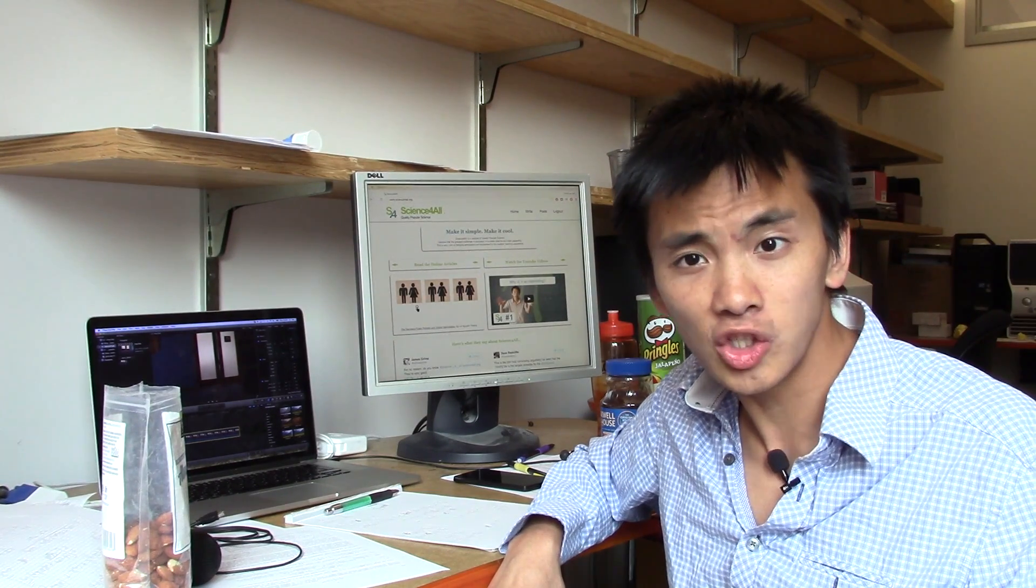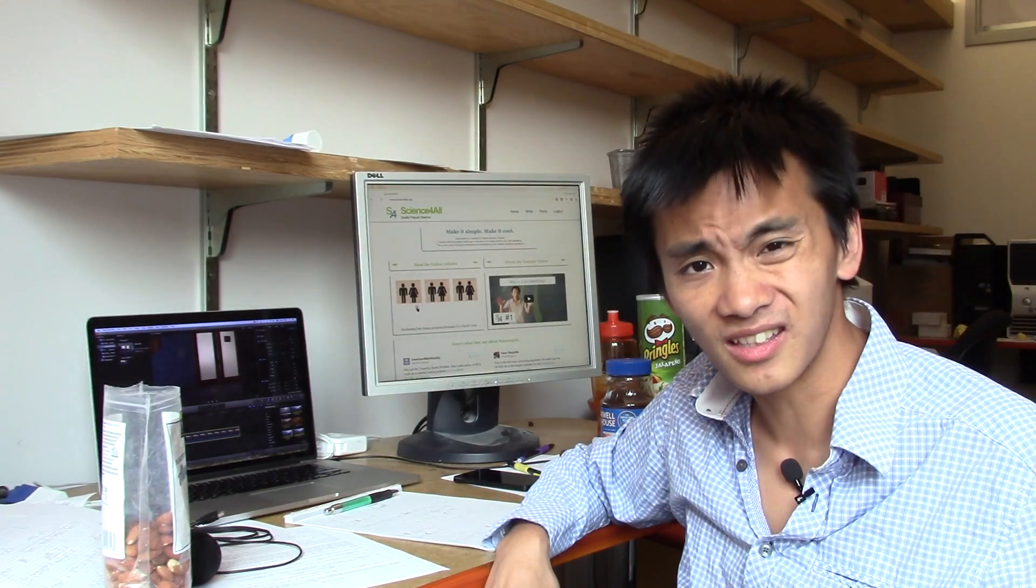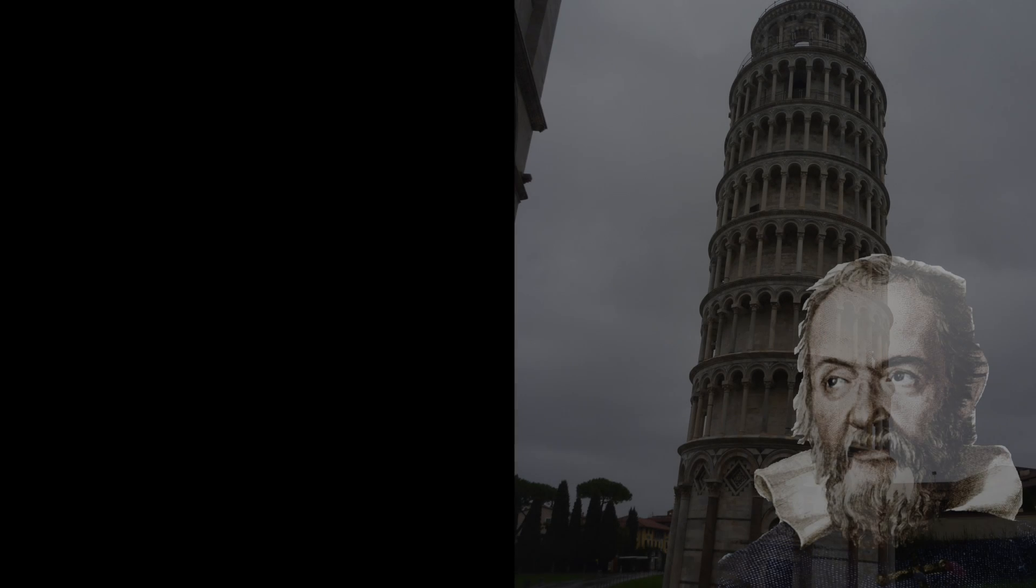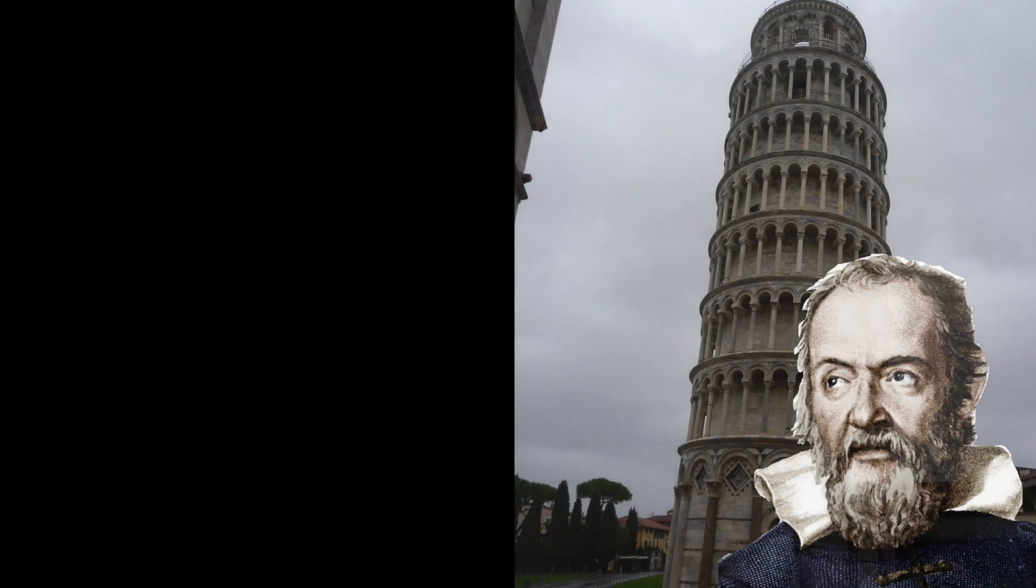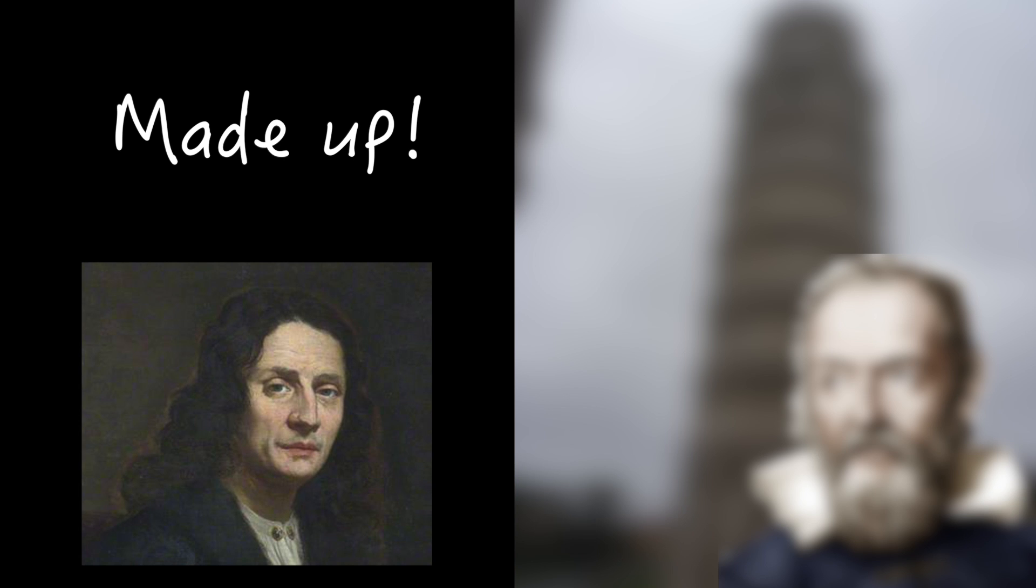But Galileo did not do the experiment himself. I mean, he didn't have access to a huge amount of vacuum like that. In fact, the story of the Pisa Tower experiment is almost surely made up, most likely by Galileo's pupil Vincenzo Viviani. And it makes sense that it's made up, right? If Galileo had done the experiment, he would have seen the heavier ball reaching the ground first, hence confirming the dominant theory of falling objects that everyone believed in back then.